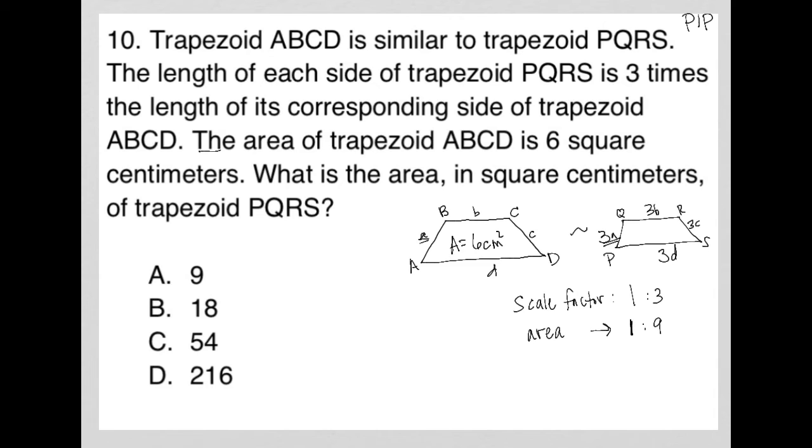So whatever the area is here, it'll be nine times that area on this side. So if the area is six, then what needs to go here to make it nine times? Well, I won't go through making a proportion and all that stuff. Instead, I'll just say it out loud. Basically, it's gotta be six times nine, right? So this has to be 54.